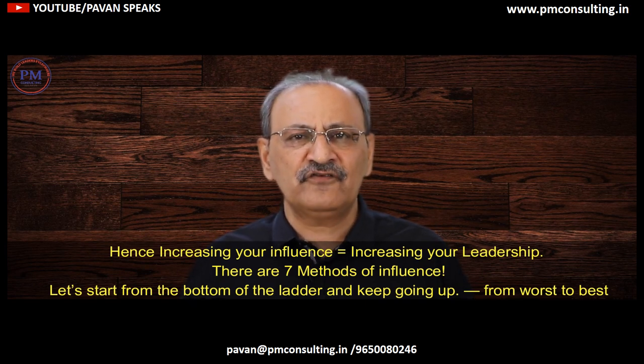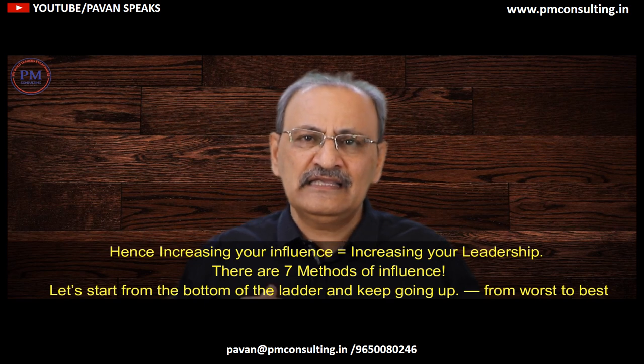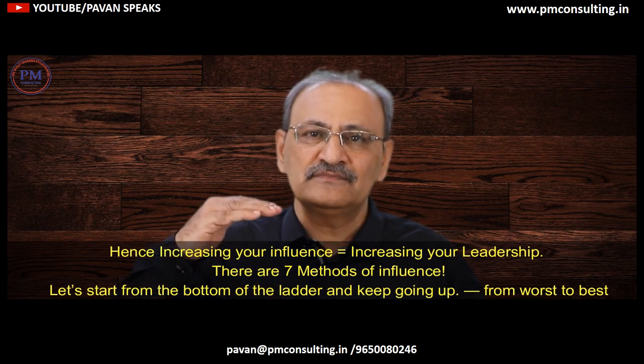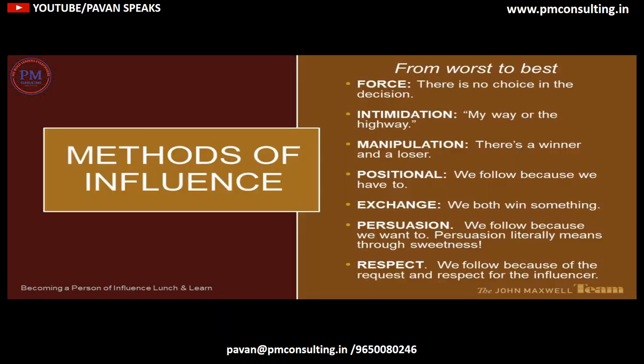Let's start from the bottom of the ladder and keep going up, from worst to best. The first is force — there is no choice in the decision. The second is intimidation — it's my way or the highway. The third is manipulation — there's a winner and there's a loser. The fourth is positional — we follow because we have to.